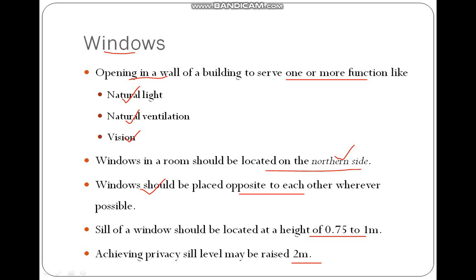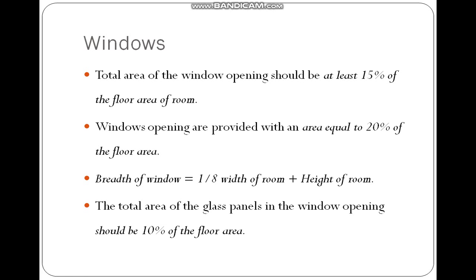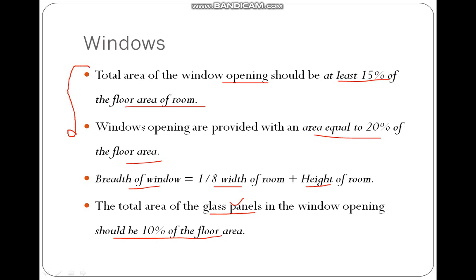If you want to achieve privacy, the sill level could be raised to 2 meters. Coming to the thumb rules: the total area of the window opening should be at least 15% of the floor area of the room, and ideally equal to 20% of the floor area. The breadth of the window should be 1/8 of the width of the room plus the height of the room. The total area of the glass panels should be at least 10% of the floor area.